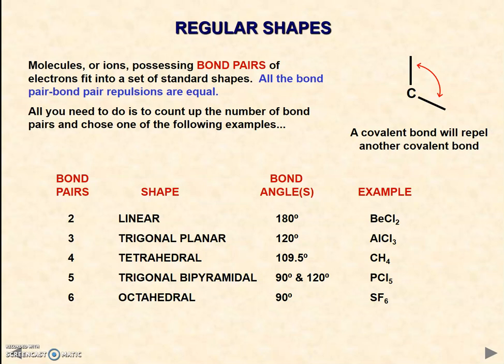We have a linear shape, trigonal planar shape, tetrahedral shape, trigonal bipyramidal, and an octahedral shape. As you can see, as you increase the number of bond pairs, the bond angle decreases.